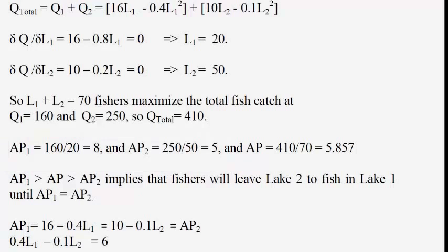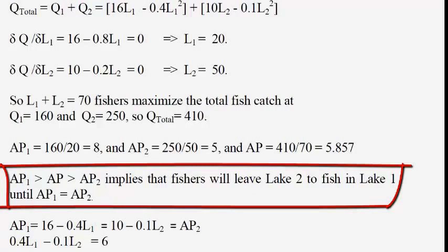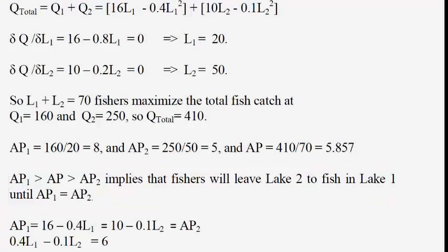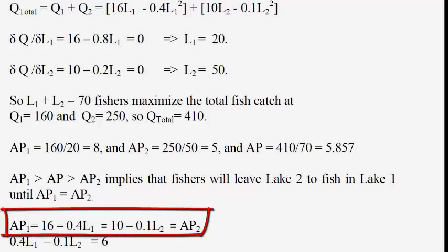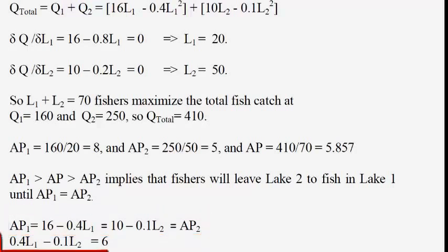If fishers get to keep the average fish catch as their reward, fishers would leave lake 2 and move to lake 1 until the average fish catch in each lake is equalized. We can determine where the average fish catch would be the same in each lake by setting AP1 equal to AP2: 16 minus 0.4L1 equals 10 minus 0.1L2. Bringing terms together gives 0.4L1 minus 0.1L2 equals 6.